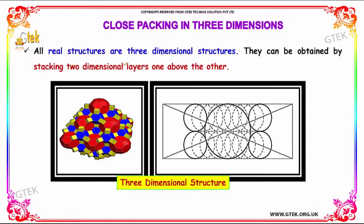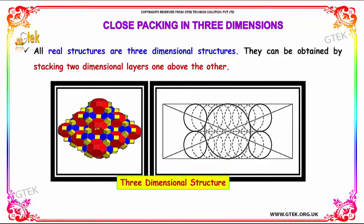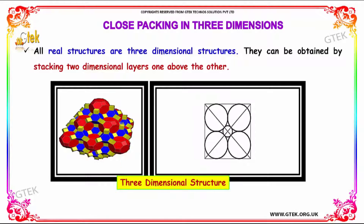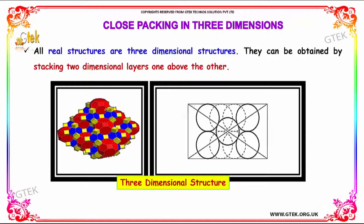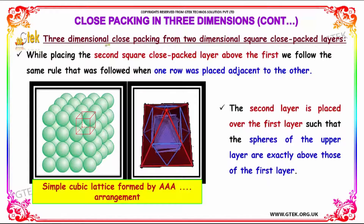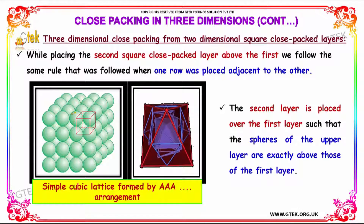All real structures, or three-dimensional structures, can be obtained by stacking two-dimensional layers one above the other. We will now discuss three-dimensional close packing from two-dimensional square close-packed layers, specifically placing the second square close-packed layer above the first.